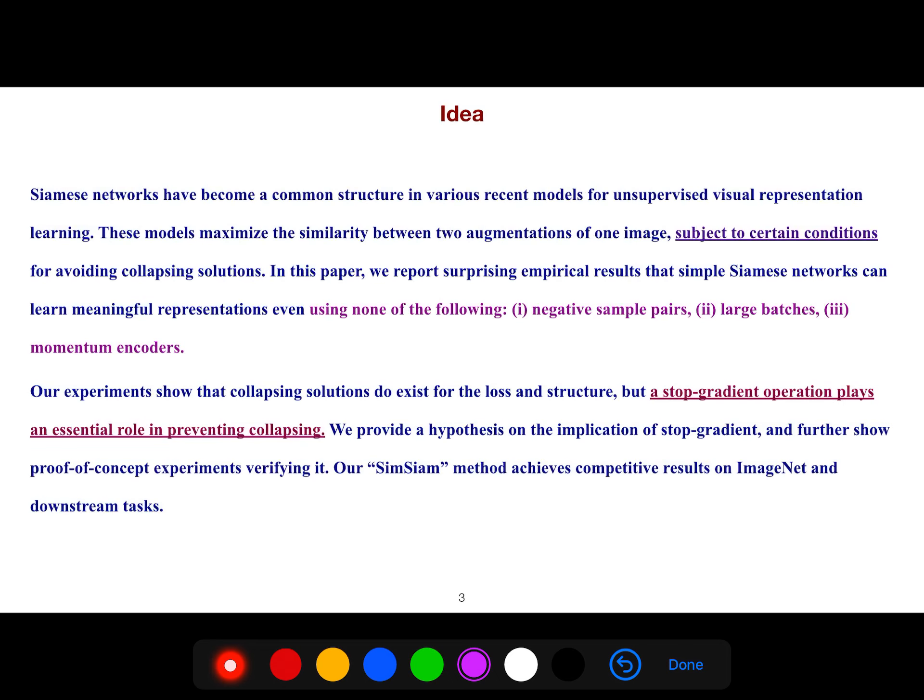Siamese networks have become a common structure in various recent models for unsupervised visual representation learning. These models maximize the similarity between two augmentations of one image, subject to certain conditions for avoiding collapsing solutions.